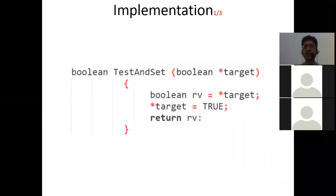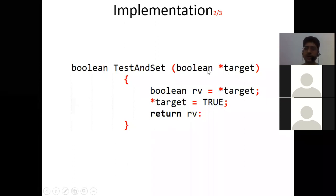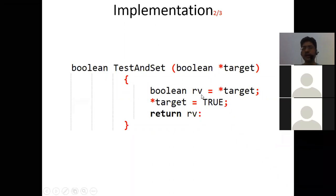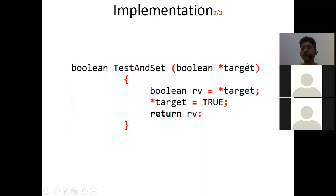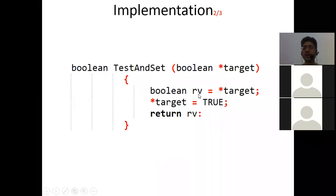To implement this, we have the test-and-set function for reference. The return type and data type is boolean, and it takes a pointer called target as a parameter. Once you get the value from target into the local boolean variable rv using the value-at-address operator, you store that address value.